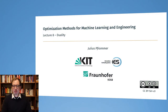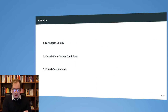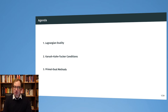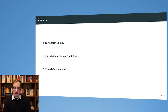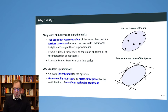Welcome to the course on optimization methods for machine learning and engineering. Today's lecture will be on duality. The agenda is as follows: first we will talk about Lagrangian duality, one particular kind of duality interesting for optimization. We will then see the Karush-Kuhn-Tucker conditions, which are conditions that need to hold for optimal solutions, and we will see the primal-dual methods which give us a nice speed-up in the optimization of convex optimization problems.